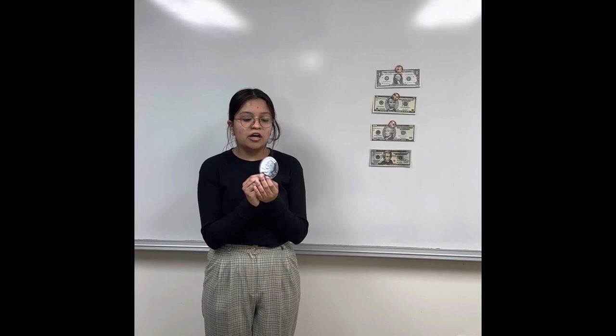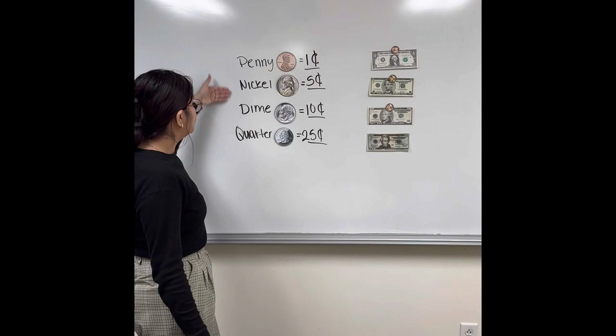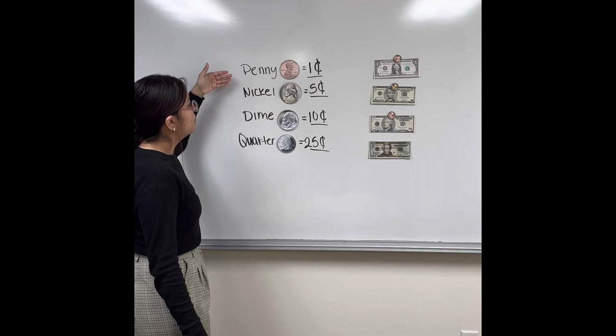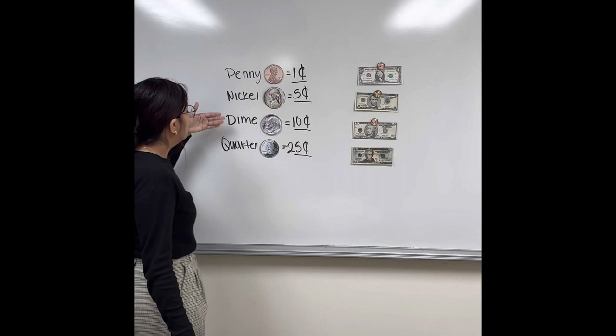Here we have the different coins and right next to them is their name and value. First, we have a penny, and it equals one cent. Here we have a nickel, and it equals five cents. Here we have a dime, and it equals ten cents. And here we have a quarter, and it equals twenty-five cents.